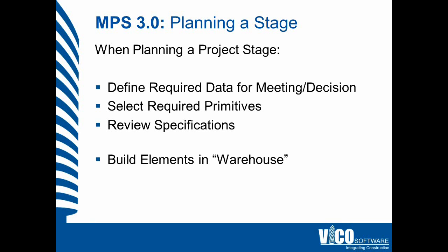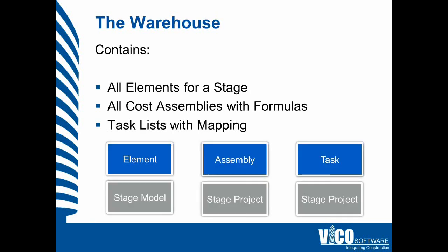Once you've done that, you define the elements for the project specifically. You can do that in what we call the warehouse, or the virtual construction warehouse — a separate model that contains samples of the elements you're going to use in that stage, along with cost data. The warehouse contains all of the elements for a stage and all of the cost assemblies with formulas, which allow you to predefine the connection to the building elements created in the stage model.